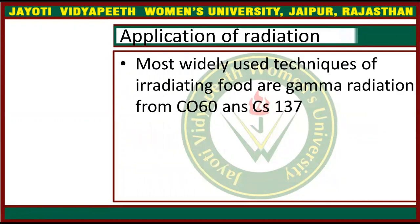Now if we talk about the most widely used rays, that would be gamma radiation. The range of gamma radiation goes from CO-60 to CS-137. This is the numeric range — the range of gamma radiation capacity.